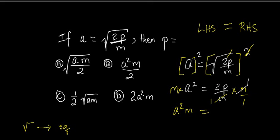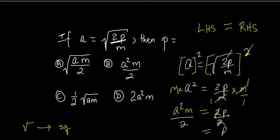On the right-hand side we have 2P — 2P divided by 1 is still 2P, multiplied by 1 is still 2P. Now how do we get rid of the 2? The 2 is affecting everything else on this side, and since it's multiplying P, we get rid of the 2 by division. We divide both sides by 2. 2 into 2 goes once on each side, and that leaves us with P is equal to A squared M over 2, which matches the answer choice.